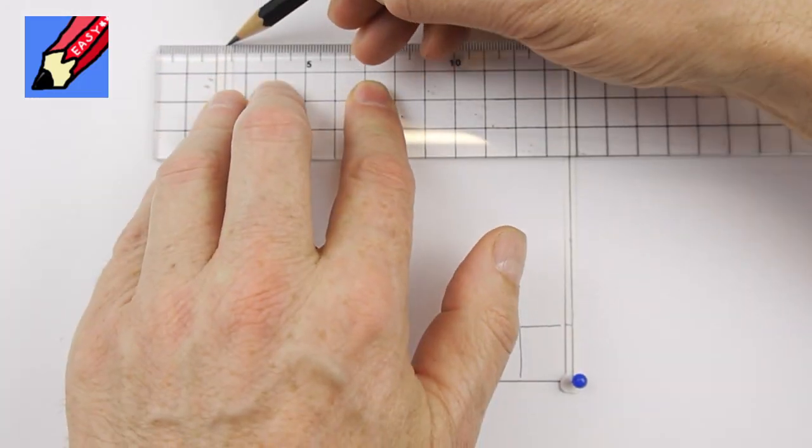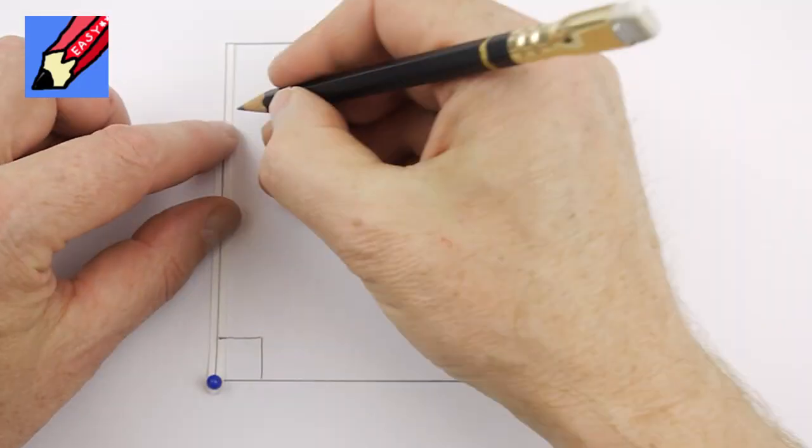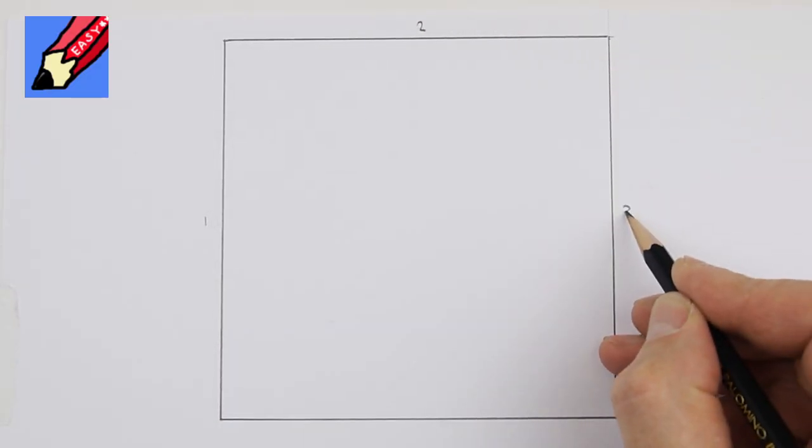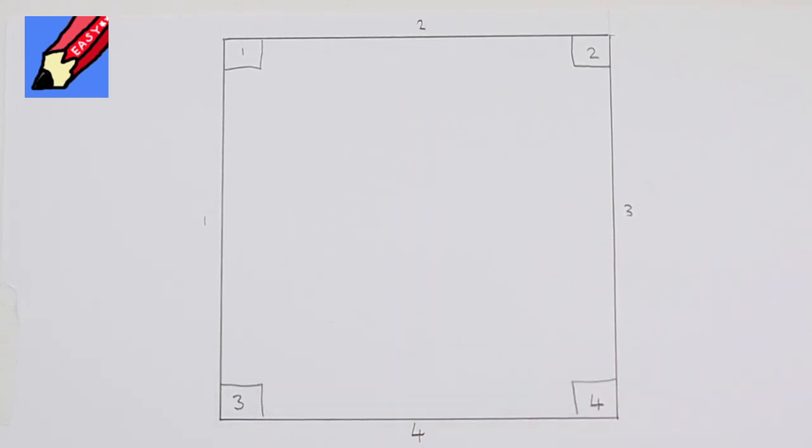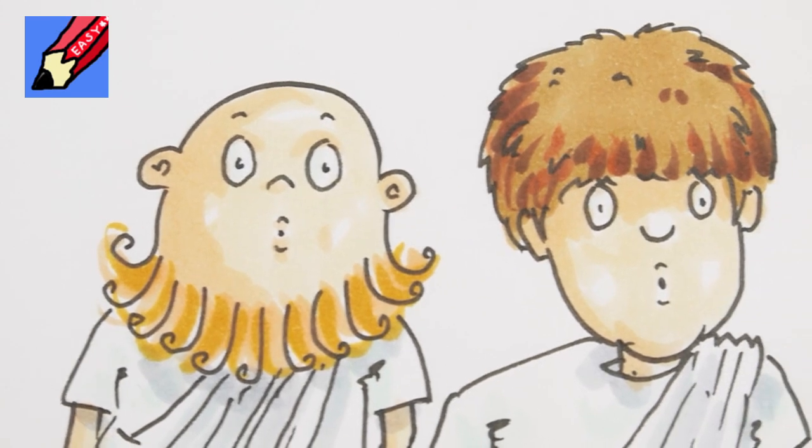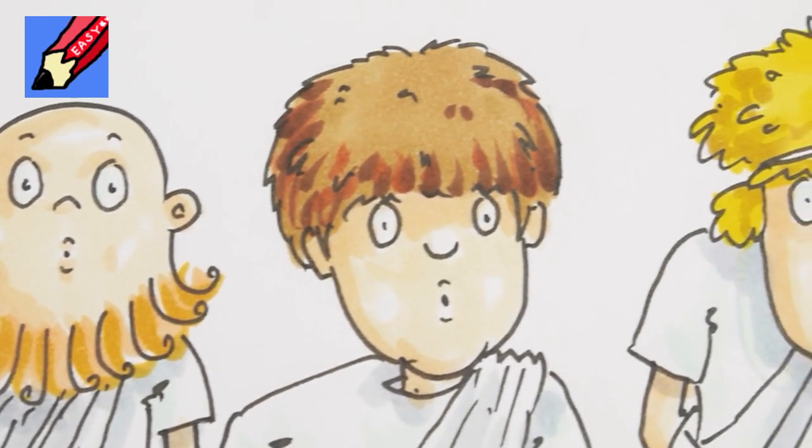And look what happens if we join the two points at the top with another line. We get four equal lines, four right angles and two pairs of parallel lines. That is so cool, said Euclid's friends.